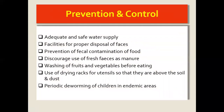Prevention is mostly a hygiene problem. Adequate safe water supply is important, along with facilities for faecal disposal so faeces don't end up on soil. Prevention of faecal contamination of food is key — discouraging use of faeces as manure, since raw food and fruits can acquire eggs that way. Washing fruits and vegetables thoroughly, using drying racks for utensils to prevent soil contact, and periodic deworming of children are all important preventive measures.